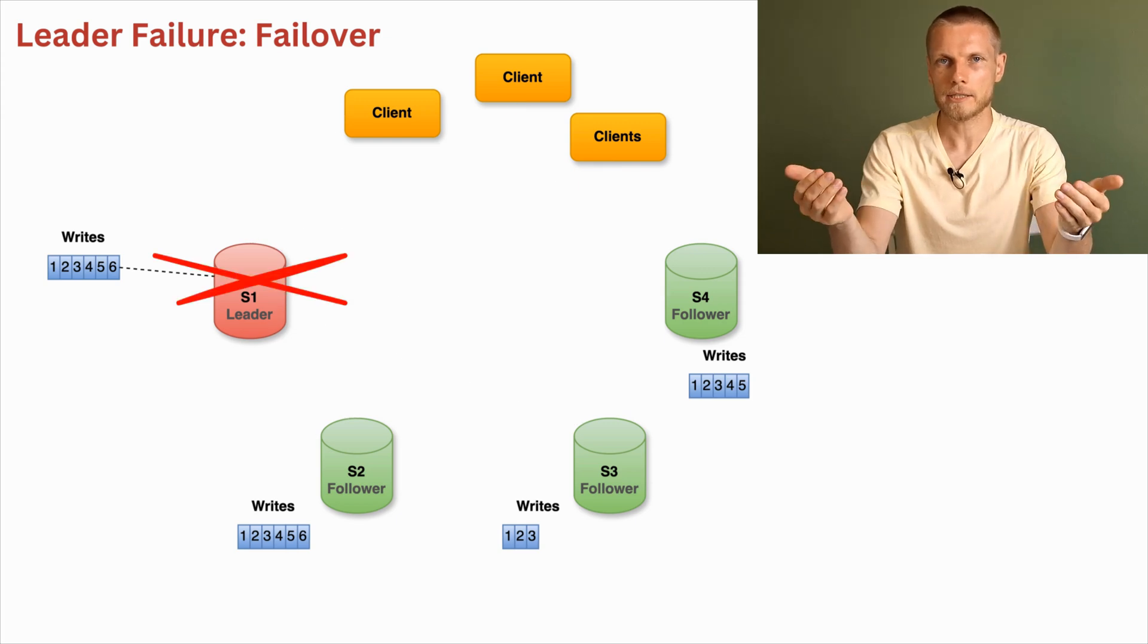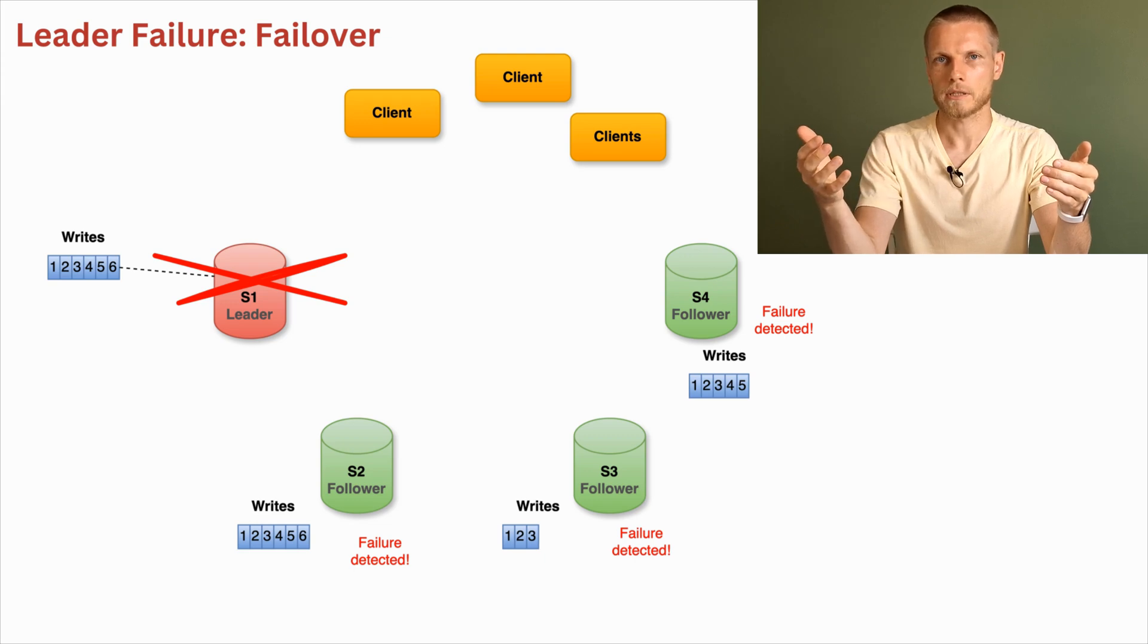Clients can't do writes anymore and replication process stops. Then followers detect the problem. Usually it happens by some timeout when followers did not receive any heartbeat messages from the leader or leader did not respond on ping messages from followers during some time.